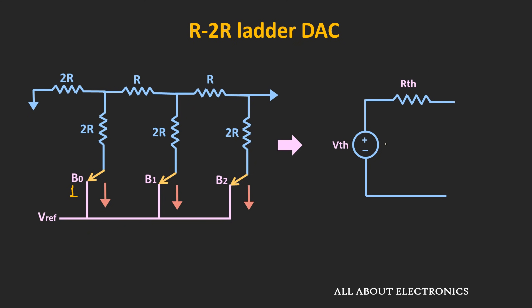To find the output, we represent the entire ladder network by the Thevenin's equivalent voltage in series with a resistor. The value of the Thevenin's equivalent voltage depends on the position of the switches. To find it, we consider one voltage source at a time and use the superposition theorem to find the overall output. We assume that at a time only one bit is 1 and only one switch is connected to the reference voltage, while the other switches are connected to ground. B0 is the least significant bit (LSB) and B2 is the most significant bit (MSB).